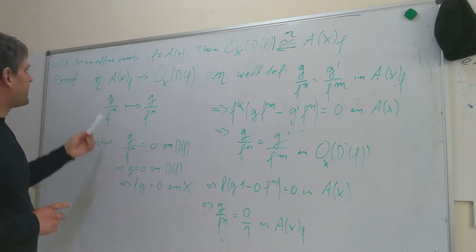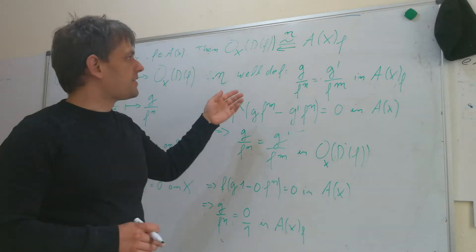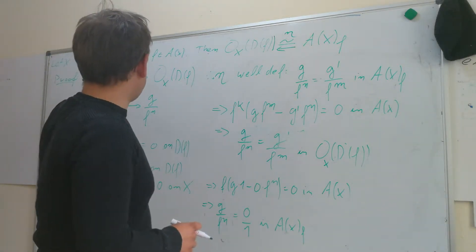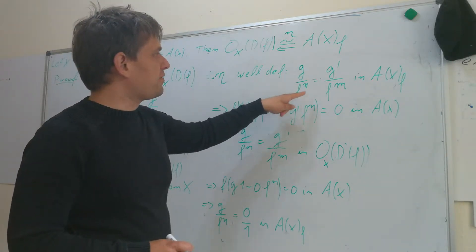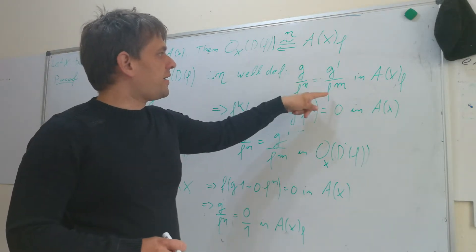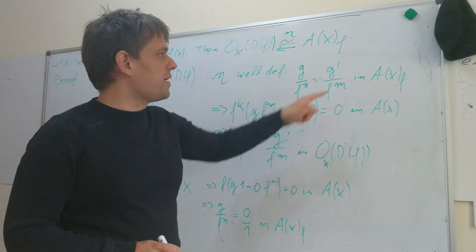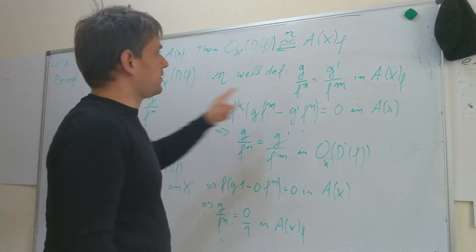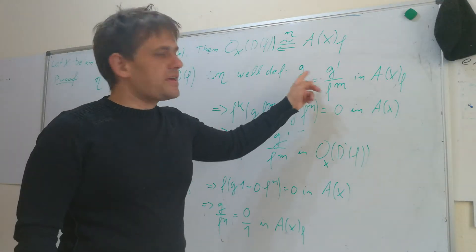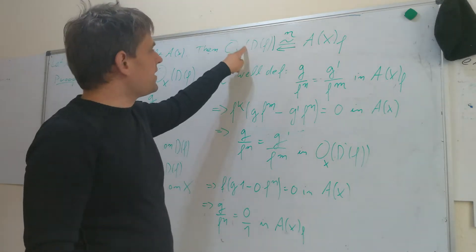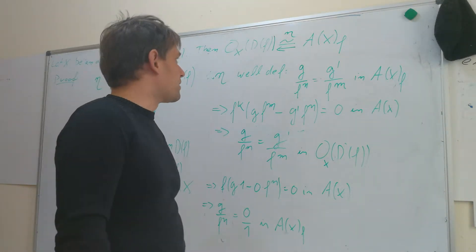To check that eta is well-defined, we need to check that if we have two representatives of the equivalence class, g divided by f^n is the same as g bar divided by f to the m in Ax localized at f, then we need to check that these two get mapped to the same element in the k-algebra of regular functions.